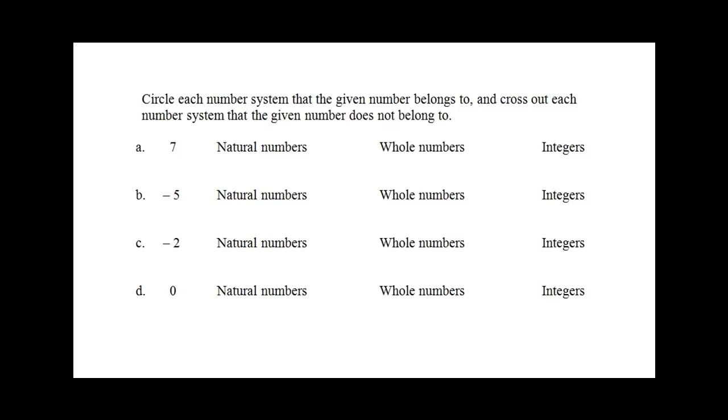This problem says to circle each number system that the given number belongs to and cross out each number system that the given number does not belong to. Let's review what these number systems are first before we can answer this question.